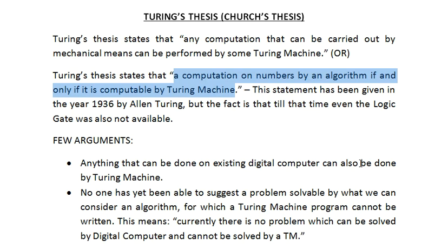The most important thing to note is that in the year 1936 — before the development of any kind of computer, before any logic gate, before any microprocessor — Alan Turing had already given this statement describing how powerful he envisioned the Turing machine to be. And it works. This is a very significant statement given in 1936: any computation that can be carried out by any mechanical means can be performed by a Turing machine.